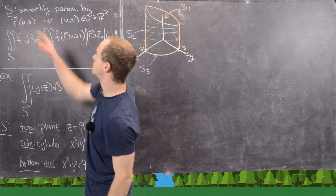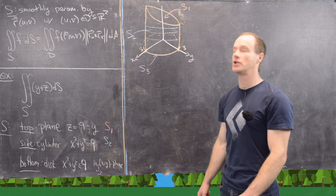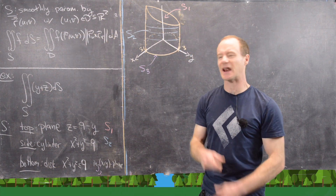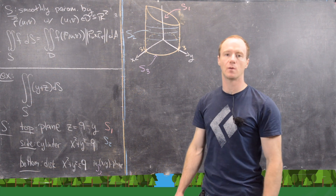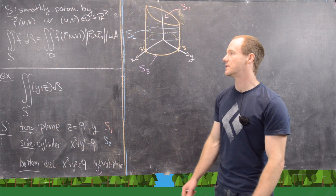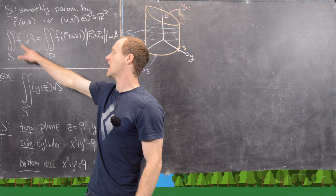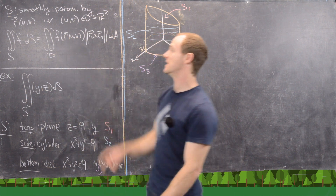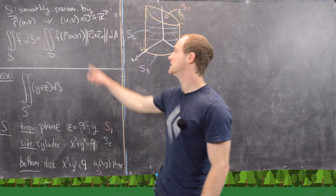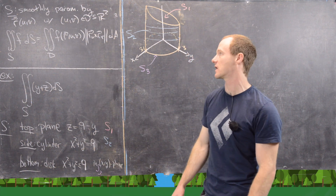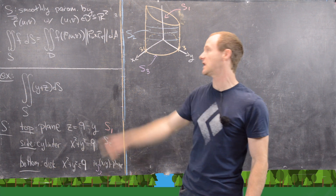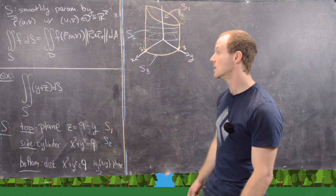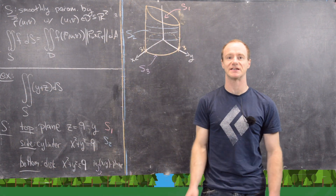We have S, which is smoothly parametrized by the vector function R(u,v), where u and v run in D, a region in the plane. R is one-to-one on this region, so it's not double-counting the surface. Then the scalar surface integral of F over S, dS, equals the double integral over D of F evaluated at the parametrized surface, times the magnitude of the cross product of R_u with R_v, then dA. The right-hand side is a standard double integral from earlier in the class, but the left-hand side — the surface integral — is a whole new thing.